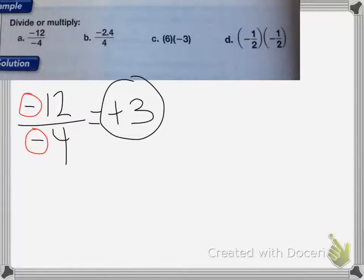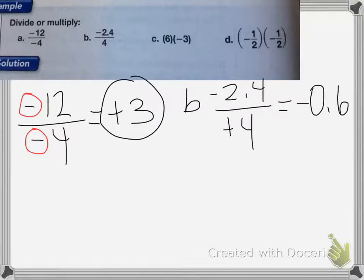For B, I have negative 2.4 divided by 4. That means that the symbols are opposite because it's negative and a positive 4. That means my answer is going to be negative. So the answer to this one equals negative 0.6.